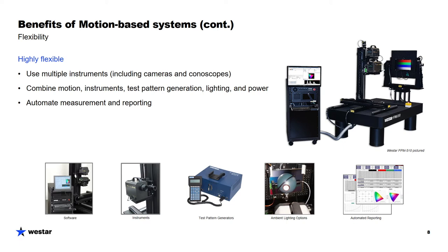Another aspect of the motion-based goniometric systems is flexibility. You can use multiple instruments on the same system, including the array-based instruments — your cameras and conoscopes. What we see in the upper right here is one of our Westar systems that has at least two instruments visible in the picture, and there's probably at least a third instrument tucked behind. You can switch between instruments as you're making measurements. You can attach power supplies, test pattern generators, light sources for reflection measurements, and automate the whole process, standardize, and generate a report as a result.